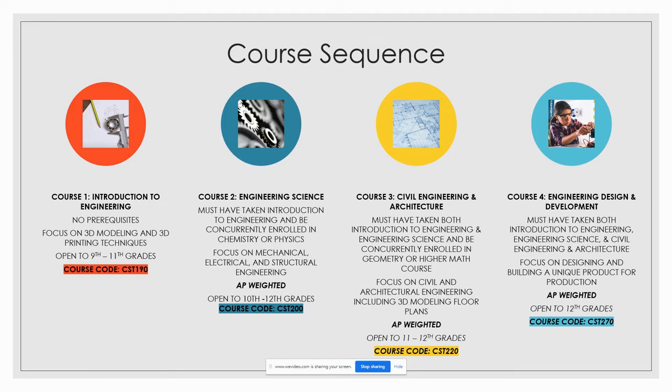If you've already taken Introduction to Engineering, the course code is CST 200 and it is open to all 10th through 12th graders. If you are ready for Civil Engineering and Architecture and have taken Introduction to Engineering, Engineering Science, and are concurrently enrolled in Geometry or a higher math course, sign up for Civil Engineering and Architecture, course code CST 220. This is open to 11th through 12th grades and is AP weighted.